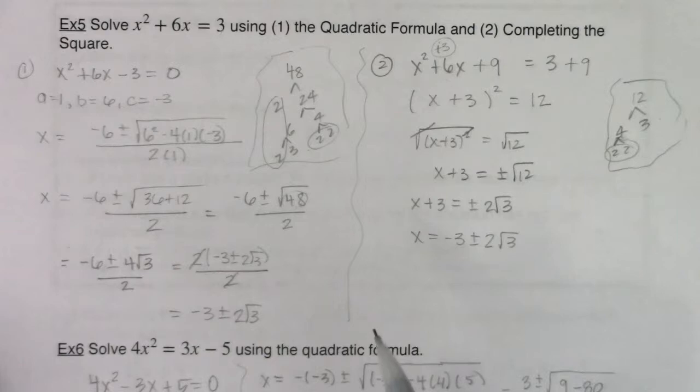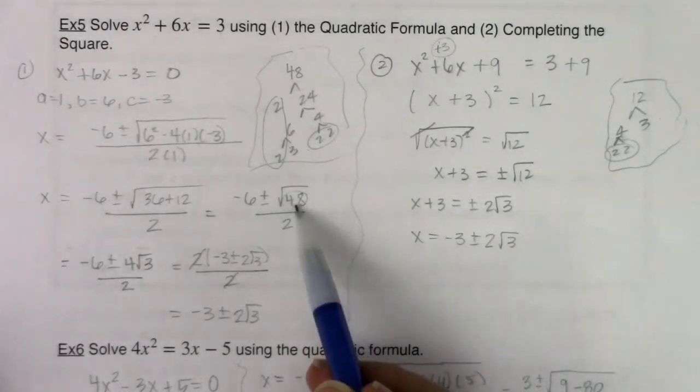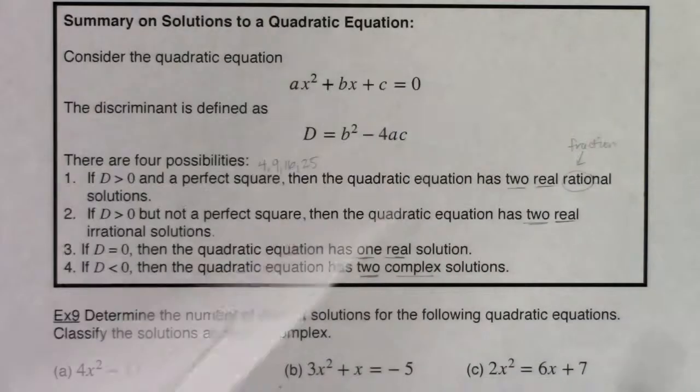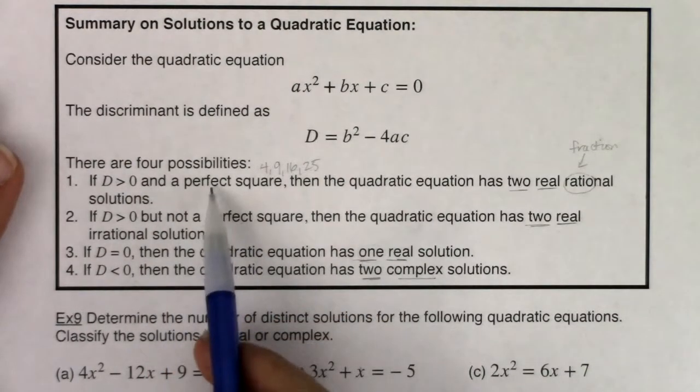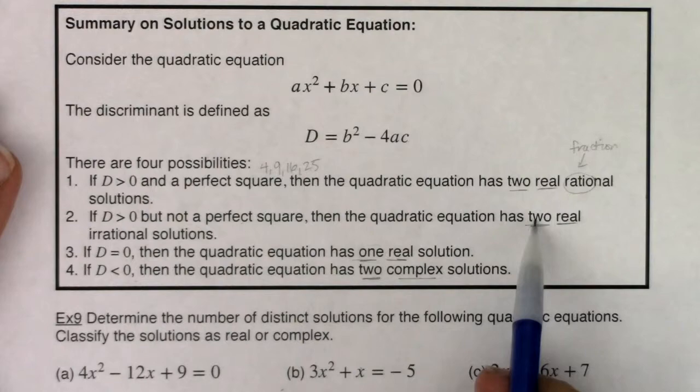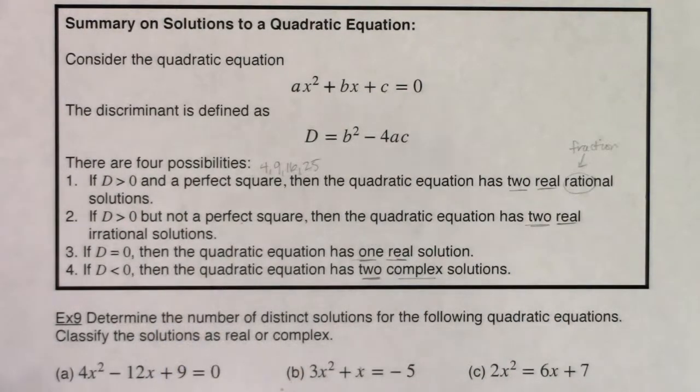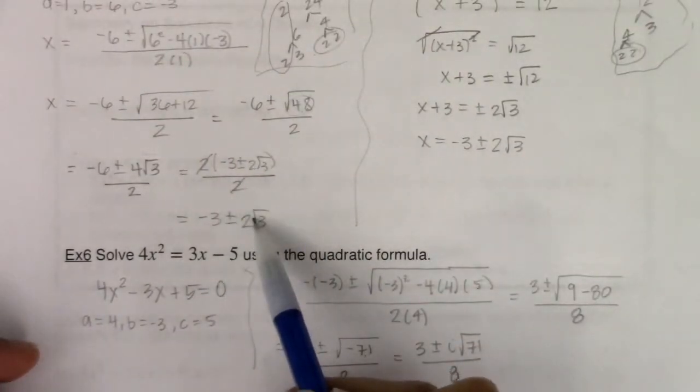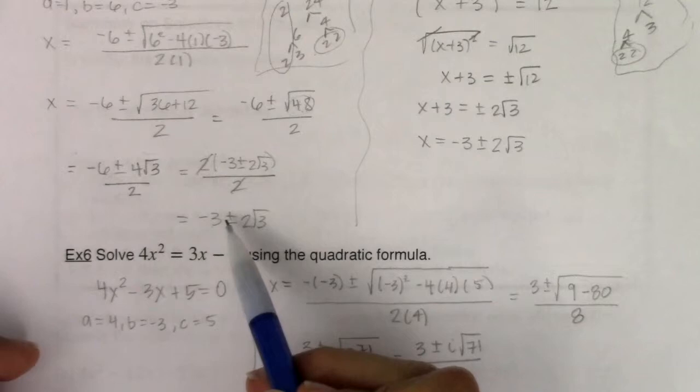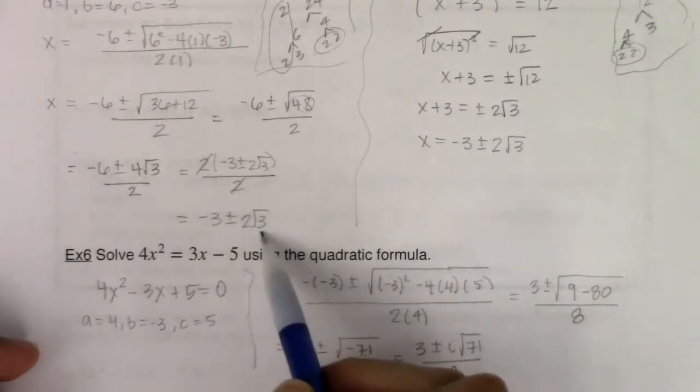Back in example 5, when we were using the quadratic formula, we had a discriminant of 48. My discriminant was positive and not a perfect square, so I had two real irrational solutions. That's correct - we had two solutions: negative 3 plus 2 root 3, and negative 3 minus 2 root 3. Radicals are irrational, you can't write them as fractions.